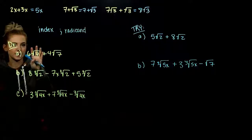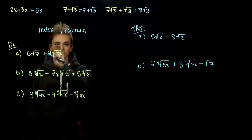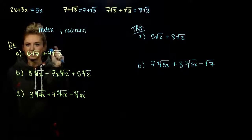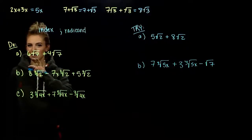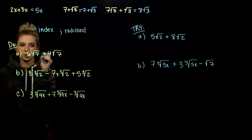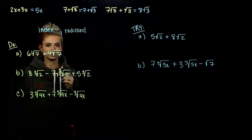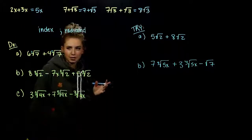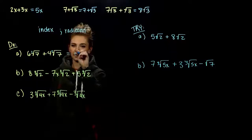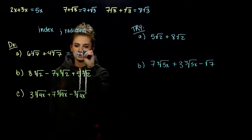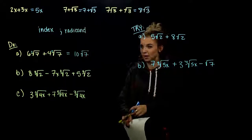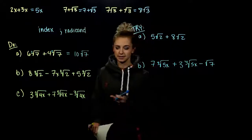Part A: I've got six factors of root 7 and four factors of root 7. We have the same index — and if it's not written, the index is 2 for square root. So we do have like terms. How many factors of root 7 do we have altogether? Ten. They match exactly: same radicand, same index.